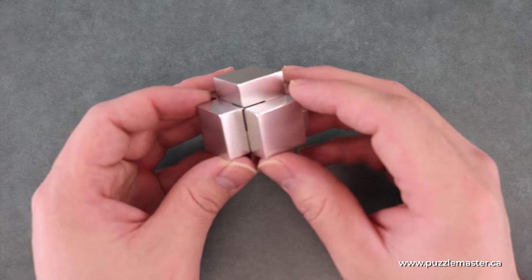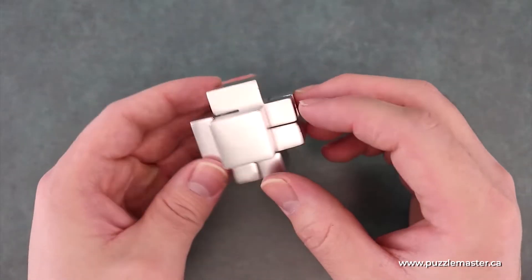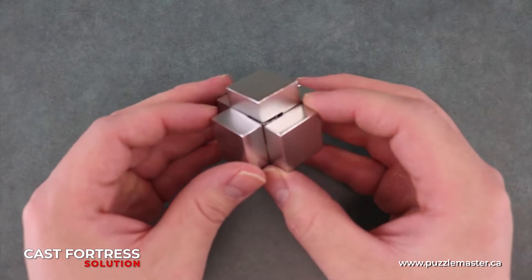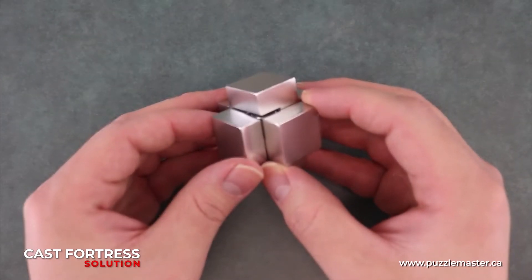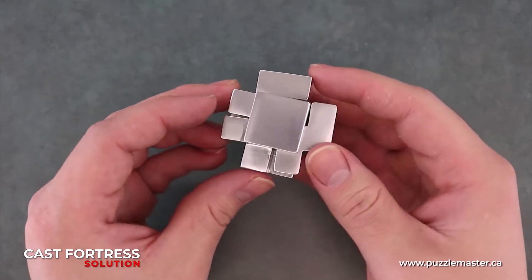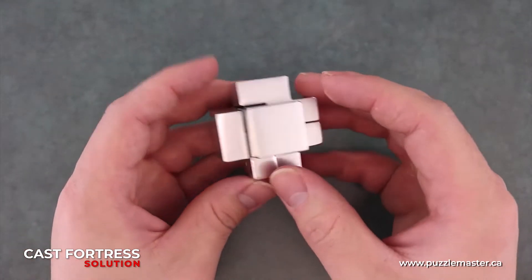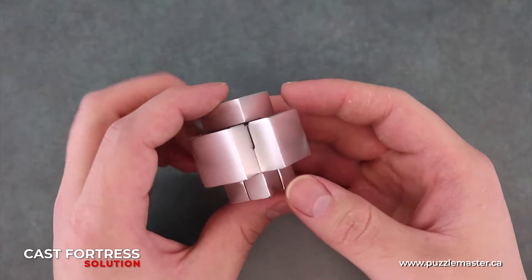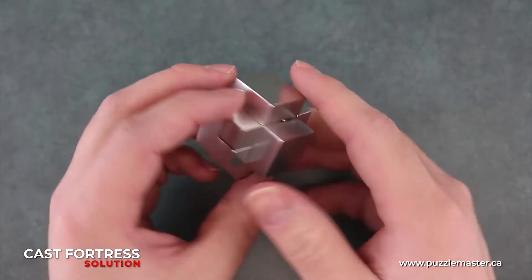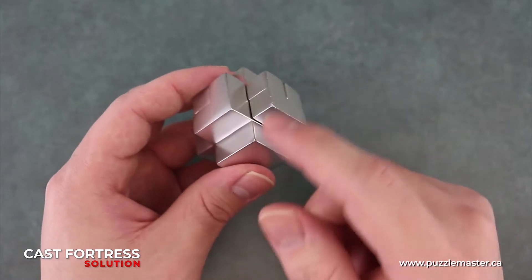Hey, this is Aaron and I'm doing another puzzle solve. We're doing Fortress, a level nine puzzle from Puzzle Master. Just to start with, we'll take a little tour of our puzzle. We can see from the face of it that we have three solid sides and then three broken sides.